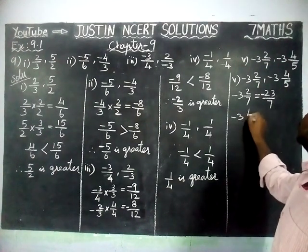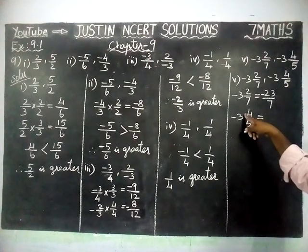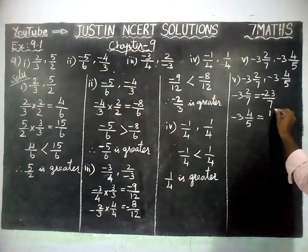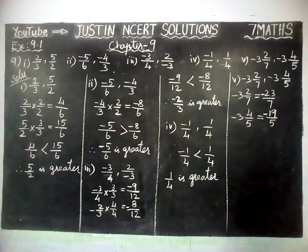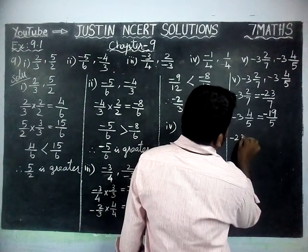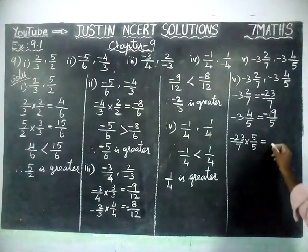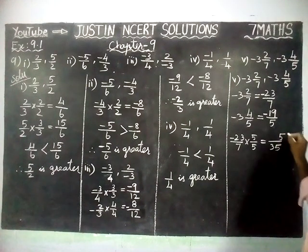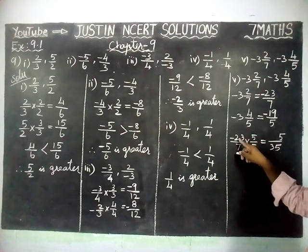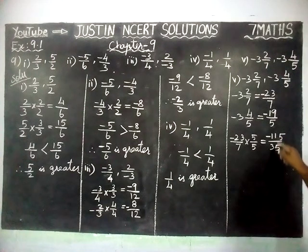Next, -3(4/5): multiply the whole part into denominator plus numerator gives 3×5=15, 15+4=19, so this equals -19/5. Now denominators are different, so we convert to equal denominators. -23/7 multiplied by 5/5: denominator becomes 35, numerator 23×5=115, giving -115/35.